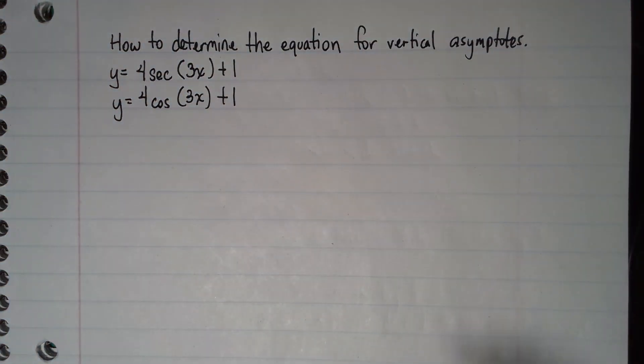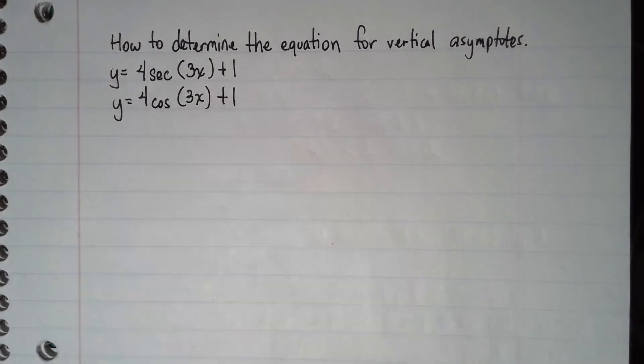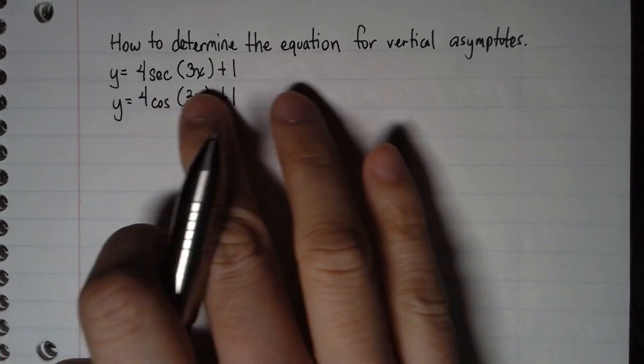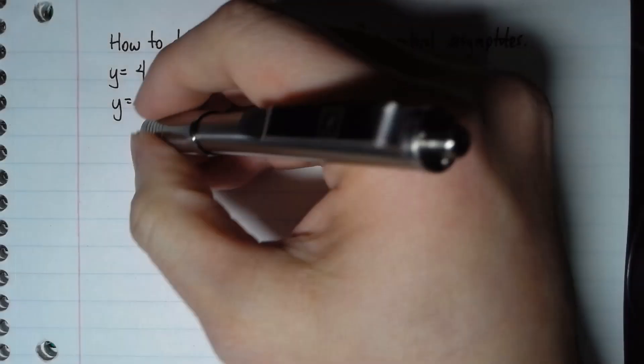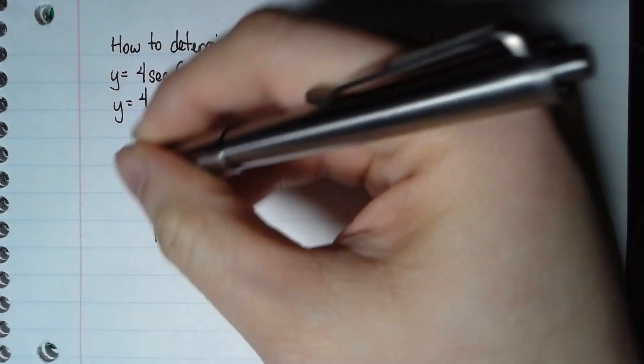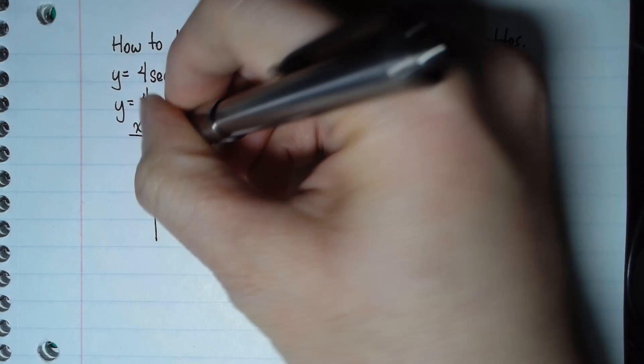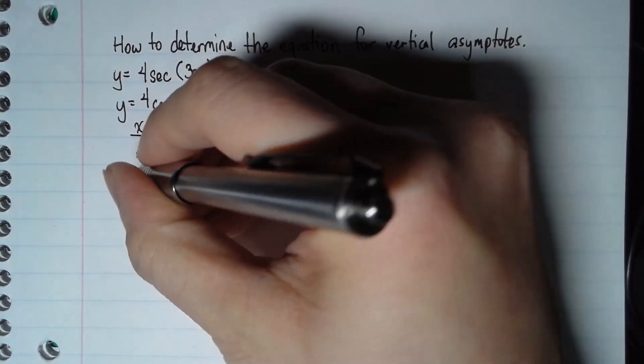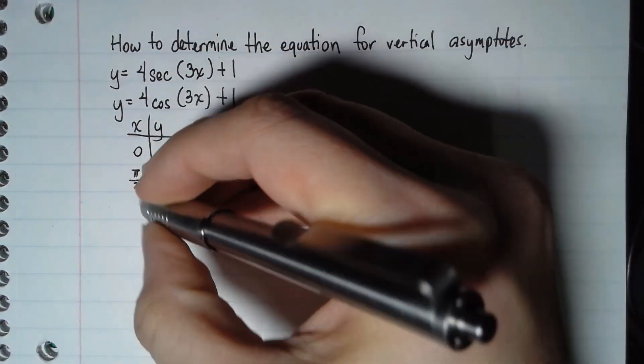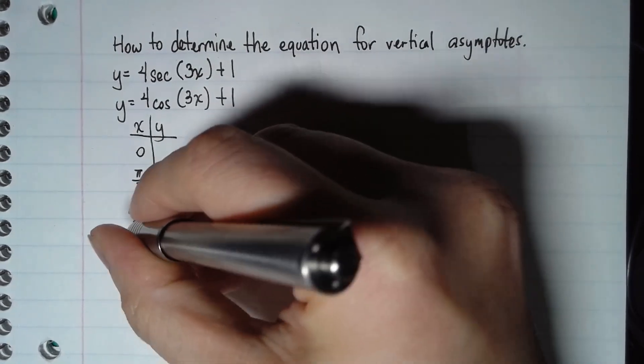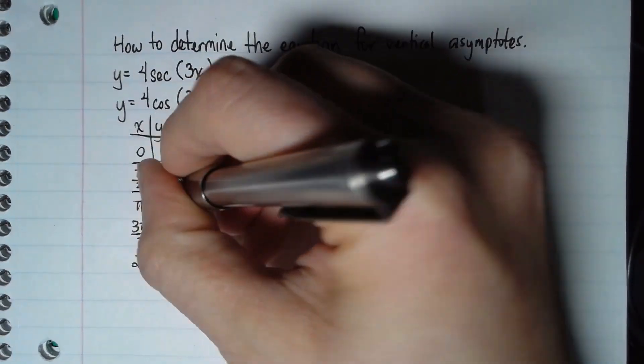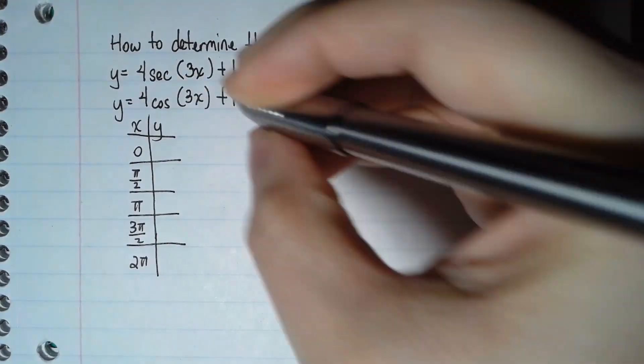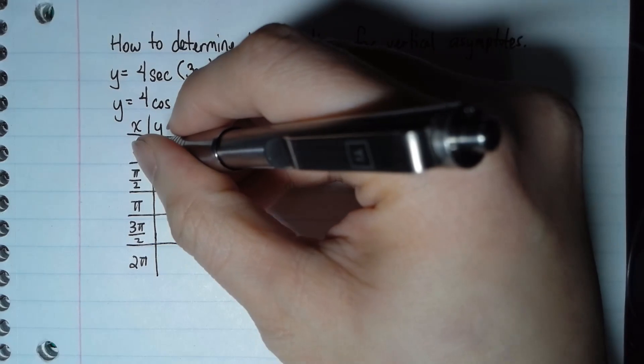Now I am assuming you already know how to transform the table for cosine with all the transformations of times 4, times 1/3, and plus 1. So I'm going to skip this portion. I'm going to write down the original table for cosine, and since cosine starts at maximum...